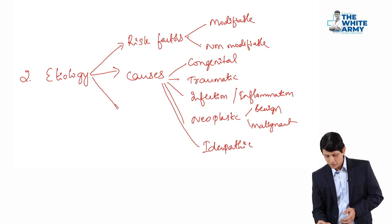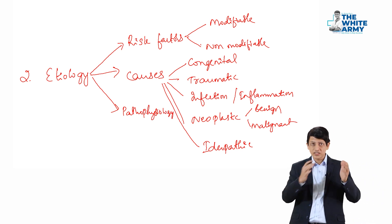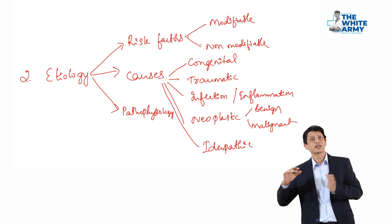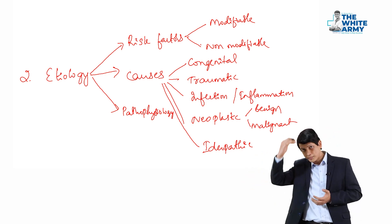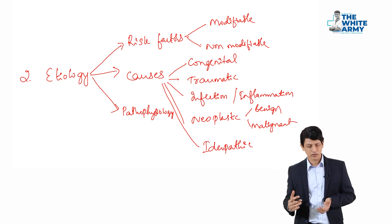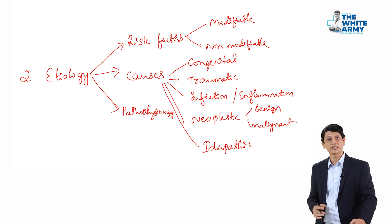And the third subheading, what you can write is pathophysiology. A brief to how these particular causes or risk factors result in that particular condition. You may explain in one or two lines or better in a flowchart manner. This is about the second heading, that is etiology.